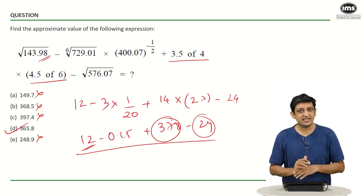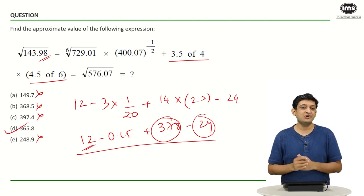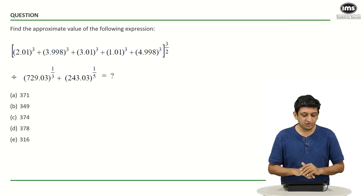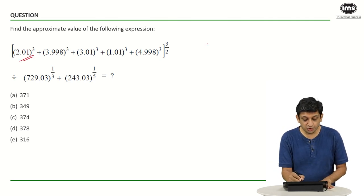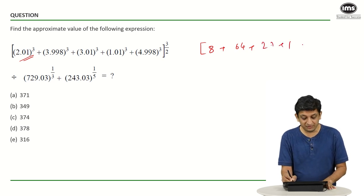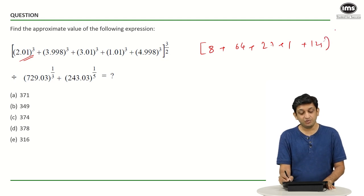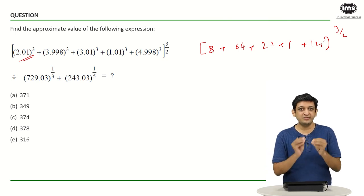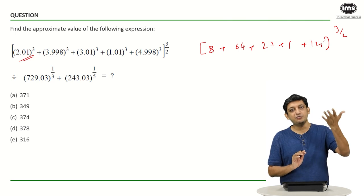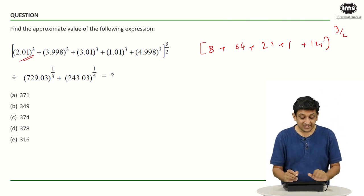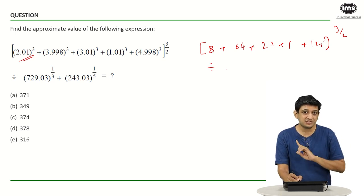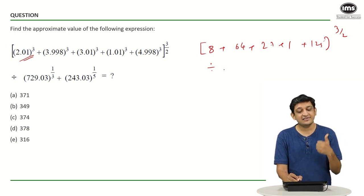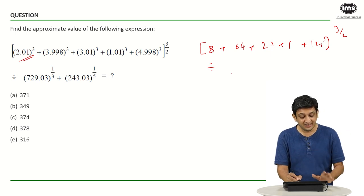Now I will show you the last question. Pause the video, solve it on your own, then look at the solution. You have to find the approximate value of the expression. The options are slightly far apart so we can manage well. Here: 2 cubed is 8, 4 cubed approximately is 64, 3 cubed is 27, 1 cubed is 1, 5 cubed is 125. Raised to 3/2 means take the square root and then cube it. This is divided by 729 raised to 1/3. As we saw previously, 729 is 9 cubed, so its cube root is 9.